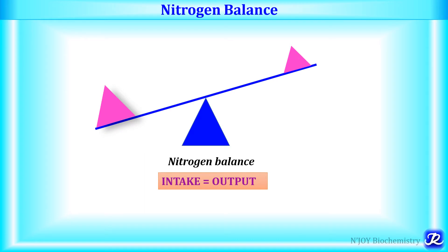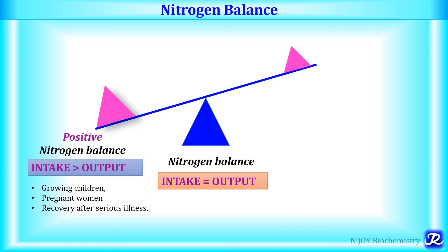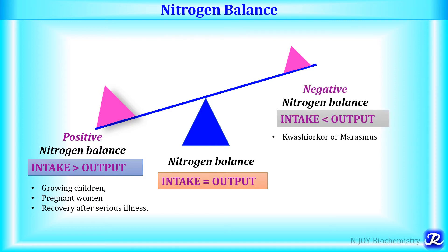There is another condition called positive nitrogen balance, when intake of protein is more than output of protein, and it is seen in growing children, pregnant women, and during recovery after serious illness. Negative nitrogen balance is when intake is less than the output, and it is seen during conditions like kwashiorkor or marasmus.